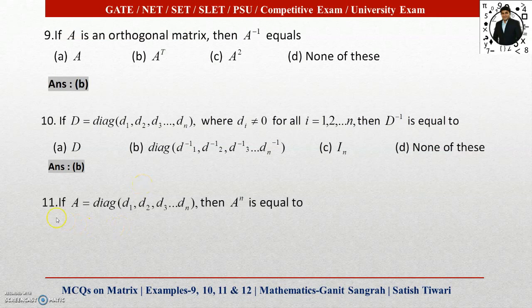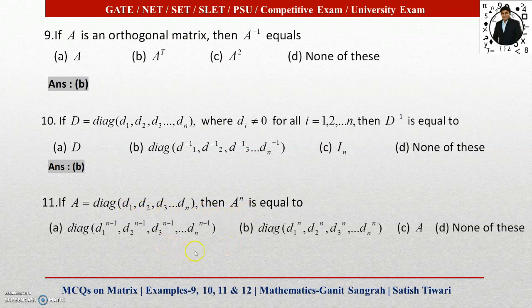Next, question 11: If A equals the diagonal matrix with entries D1, D2, D3, ..., Dn, then A to the power n equals what? We are given 4 options. Option A is correct here. You can verify option A by considering any random example for a 2×2 matrix or a 3×3 matrix, and you will get this answer.